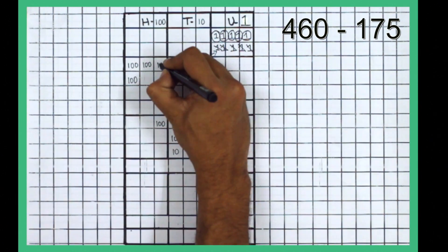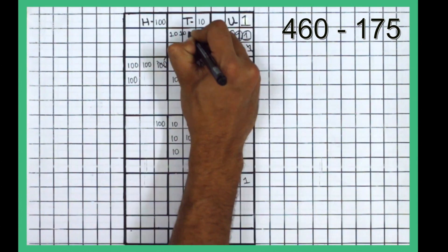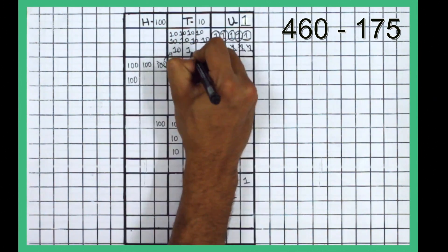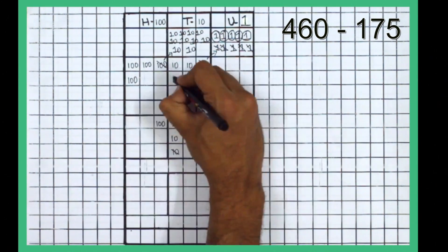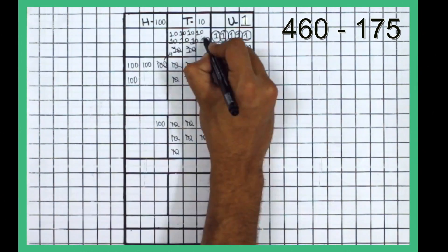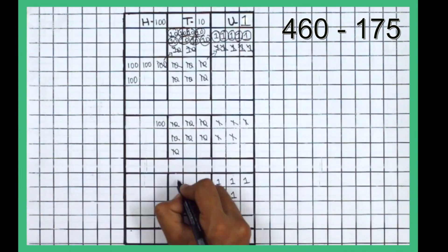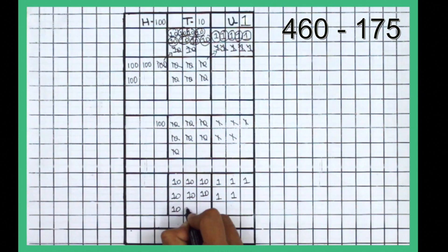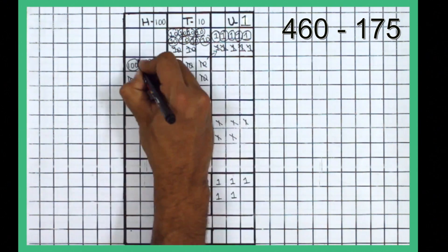Similarly, borrow 100 and regroup as 10 ten rupee notes. Strike the tens and circle and write the difference. Follow the same procedure with the hundreds to get the final answer.